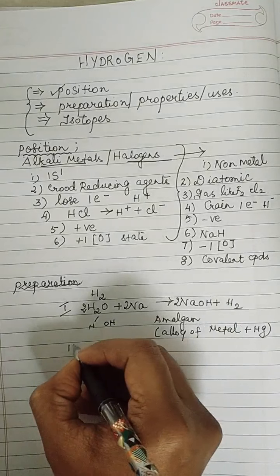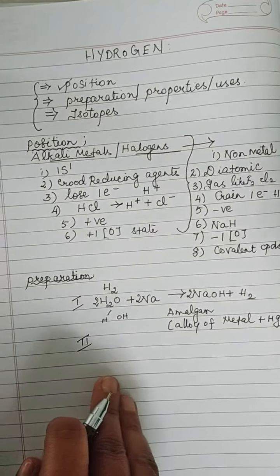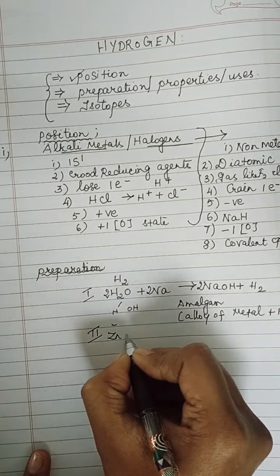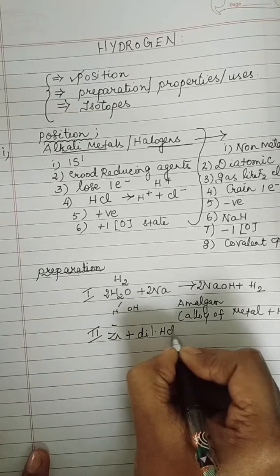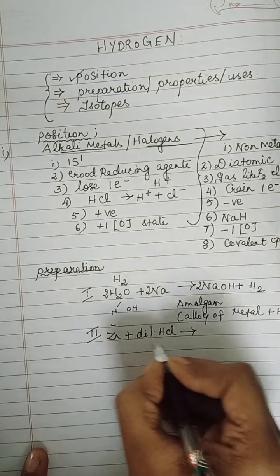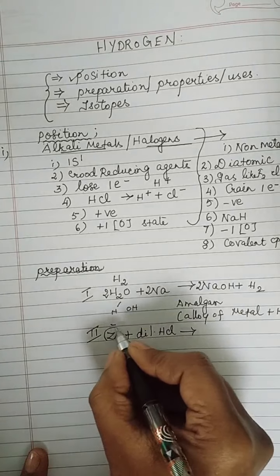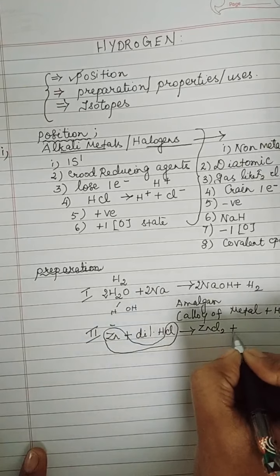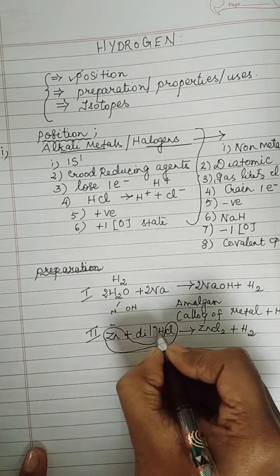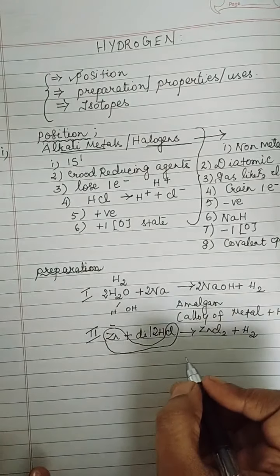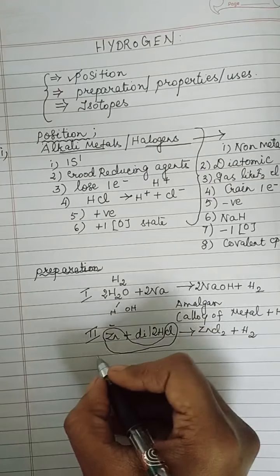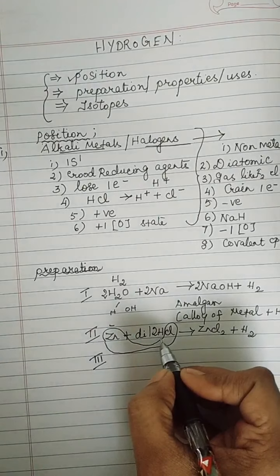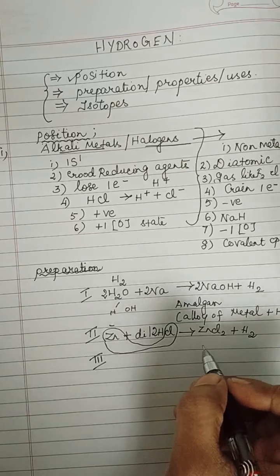The second way of preparing hydrogen, especially in the laboratory, is by reaction of zinc granules with dilute HCl or dilute sulfuric acid. Zinc and chloride combine to give zinc chloride plus hydrogen: Zn + 2HCl → ZnCl₂ + H₂. This is the second laboratory method for preparing hydrogen.